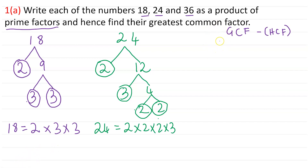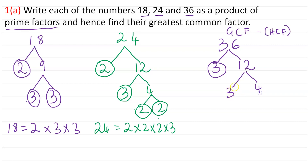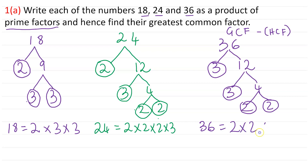Now for the last number, 36. We can write 36 as 3 times 12. 3 is prime, so we circle it. Then 12 is 3 times 4 — 3 is prime, we circle it, and 4 is 2 times 2, so we circle those too. So 36 is equal to 2 times 2 times 3 times 3.